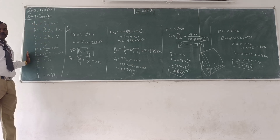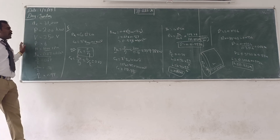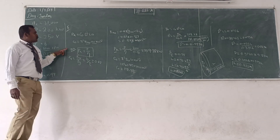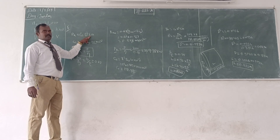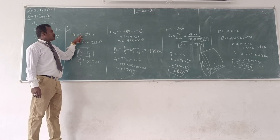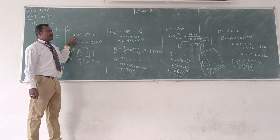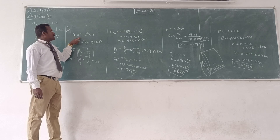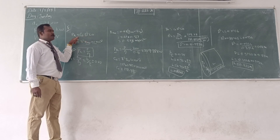From that, they are asking you to find the diameter and length of the machine — that is the main dimensions. While calculating the diameter and length of the machine, you should use the output equation of the DC machine: PA = C0 × D²LN. That is the output equation.